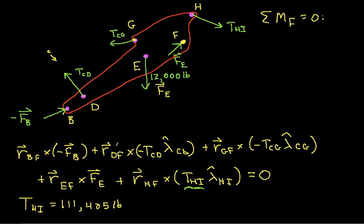So the next thing to do is to sum the forces and set them equal to zero. So the sum of the forces, we have minus F B minus T C D lambda hat